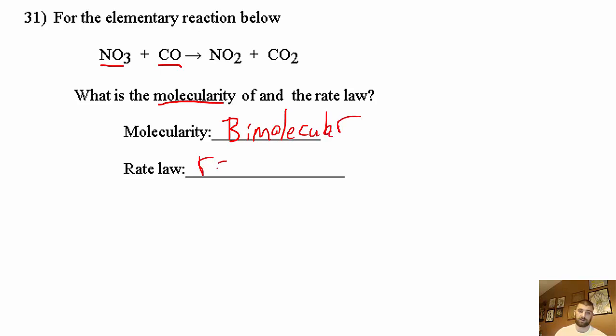The rate law would be R equals K, and because this is an elementary step we can use the coefficients to figure out what order it is. So the rate law would be R equals K times NO3 to the one times CO to the one as well.